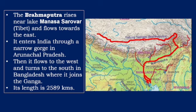The third important river system of India is the Brahmaputra. River Brahmaputra rises near Lake Manasarovar in Tibet and flows towards the east. It enters India through a narrow gorge in Arunachal Pradesh, then flows to the west and turns to the south in Bangladesh, where it joins river Ganga. Its total length is 2589 km.